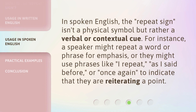In spoken English, the repeat sign isn't a physical symbol, but rather a verbal or contextual cue. For instance, a speaker might repeat a word or phrase for emphasis, or they might use phrases like 'I repeat,' 'as I said before,' or 'once again,' to indicate that they are reiterating a point.